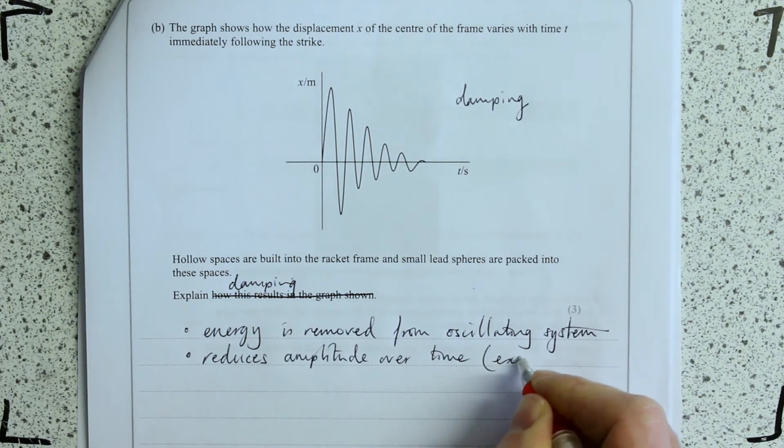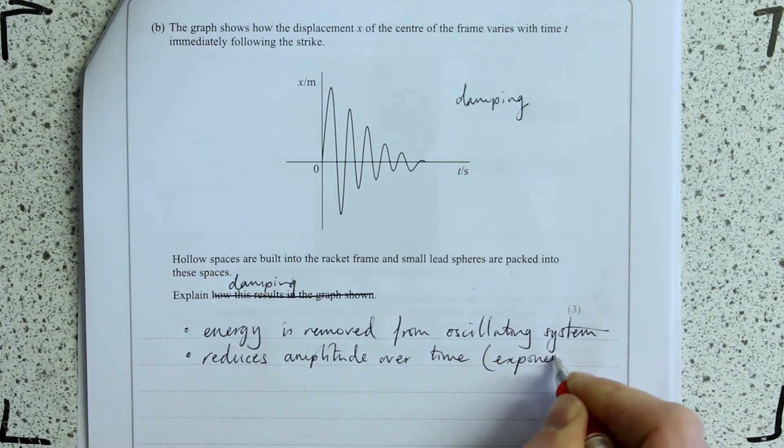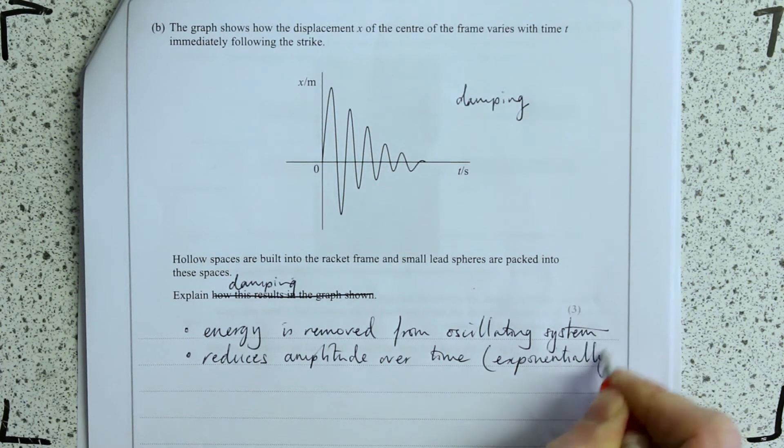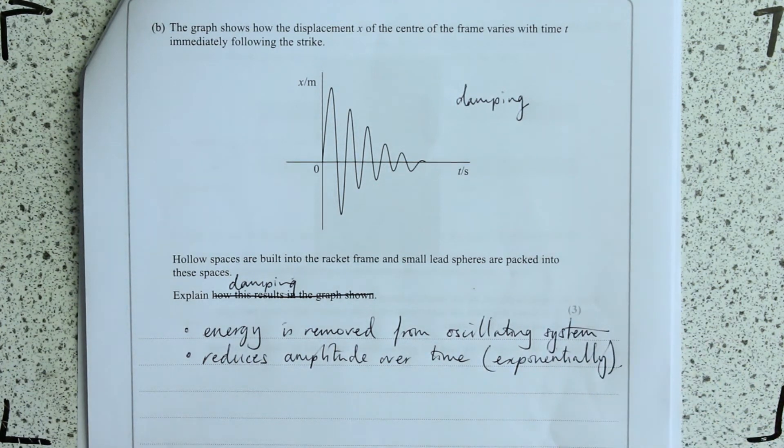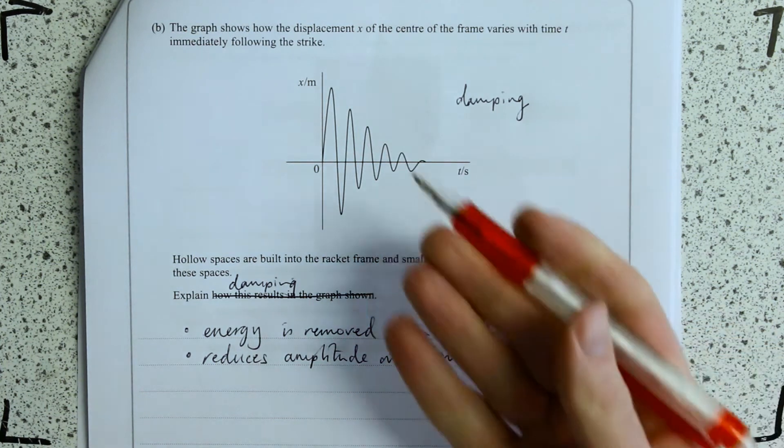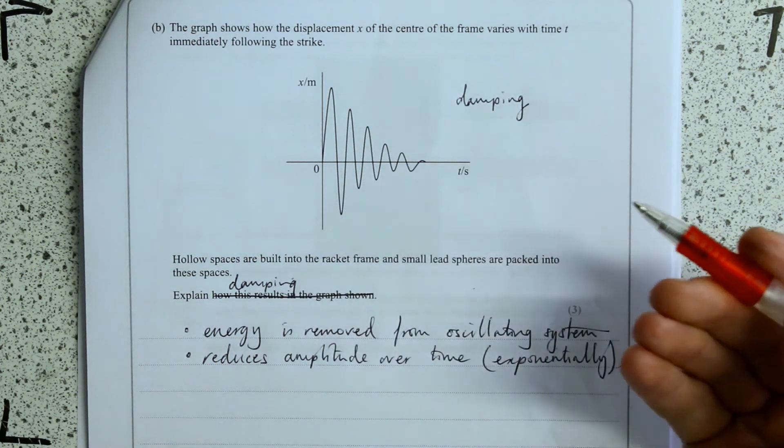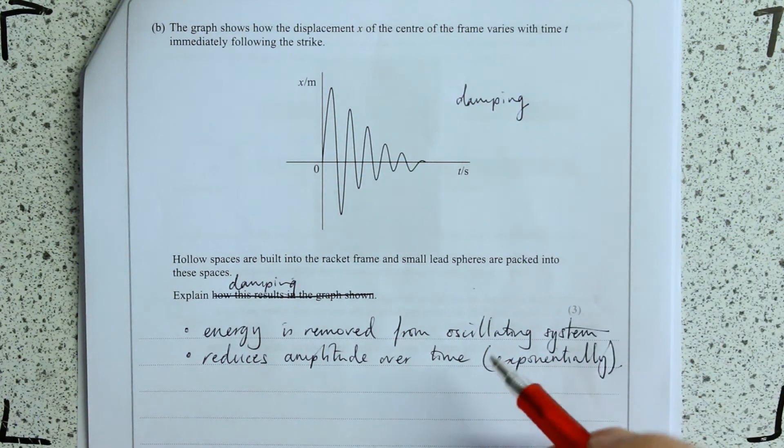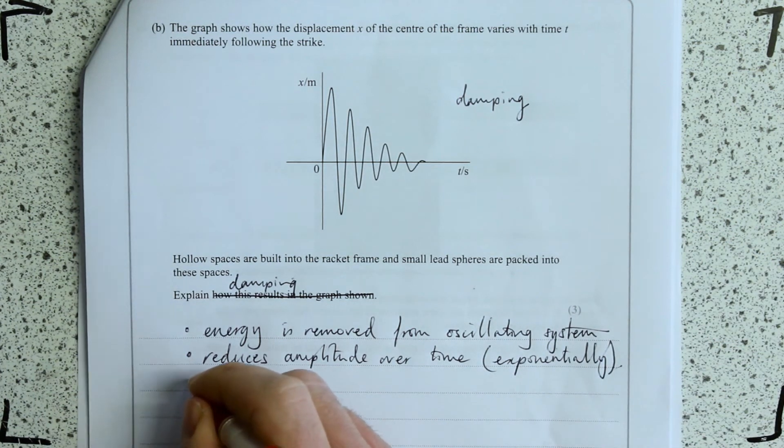And I may just, just in case, because I know it's an exponential, I'm just going to put that in as well, but it's not actually part of the mark scheme. But you know it might be at one point. Explain the shape of this graph might have an exponential in it.